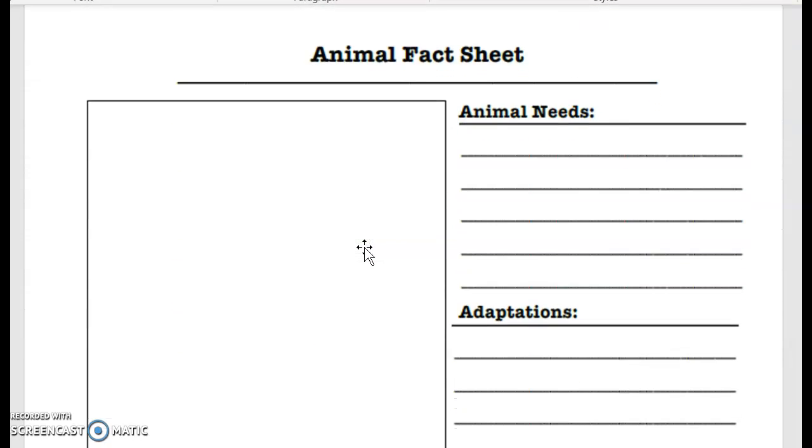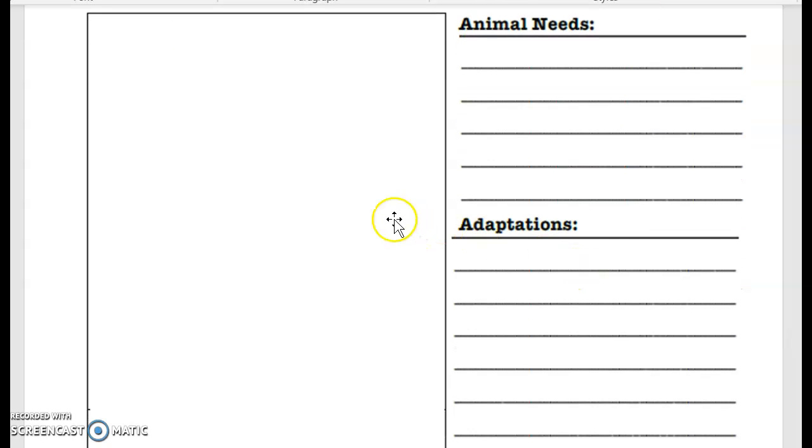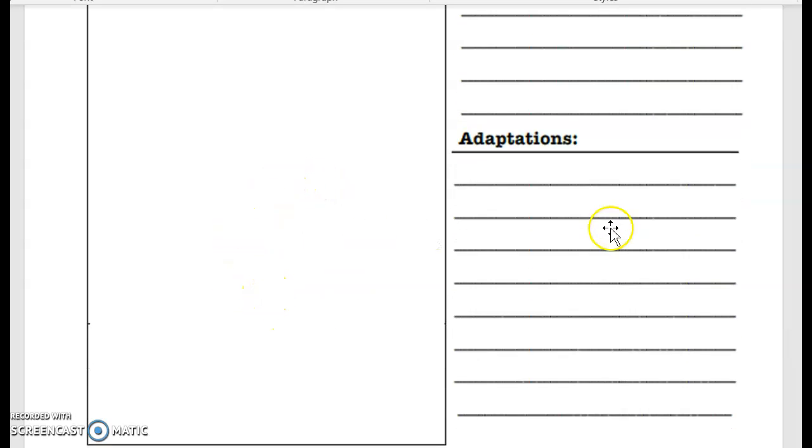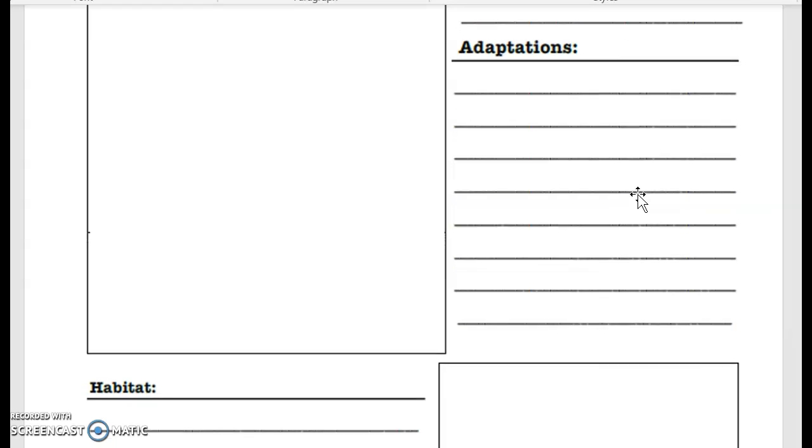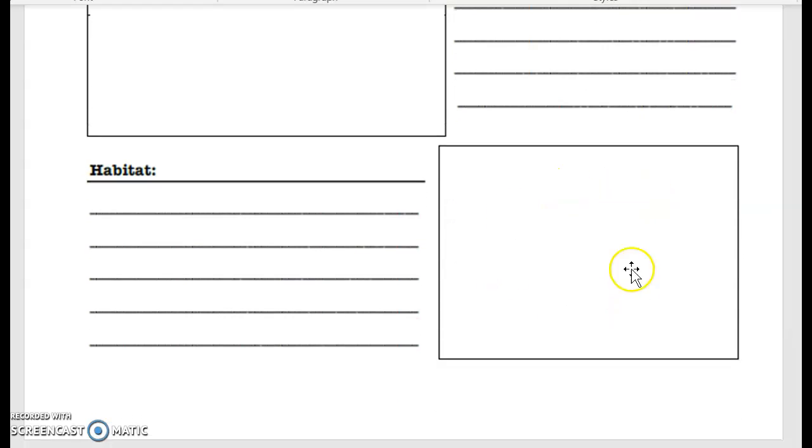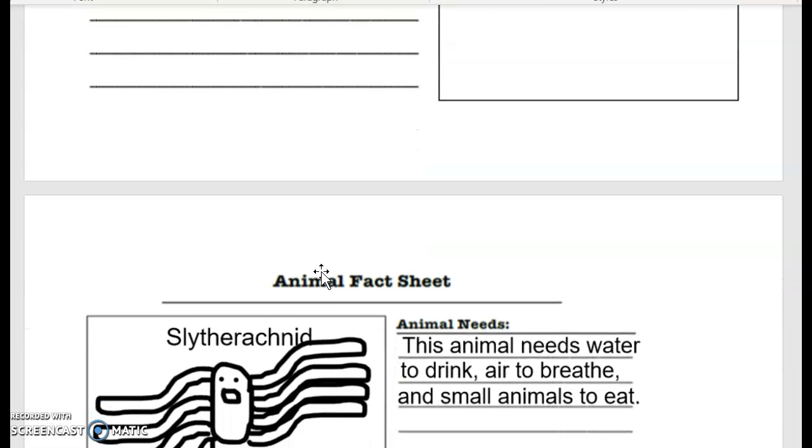So this is what you are going to use. You're going to name your animal. You're going to write down some of its needs in sentences. You're going to draw your animal. You're going to write down some adaptations it has in order to live in its habitat. What parts of its body does it need? You're going to draw the habitat and describe the habitat. So I'll show you mine so you know what I'm talking about.